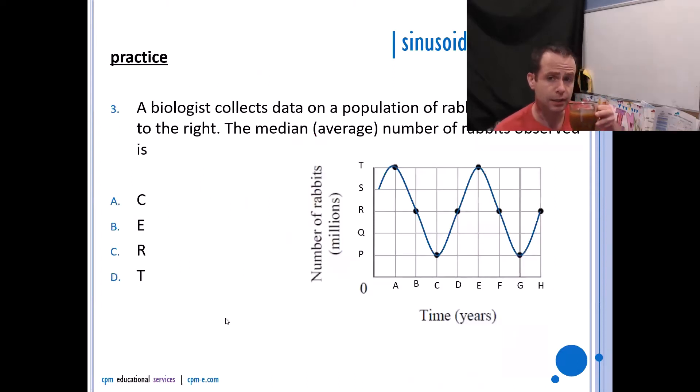A biologist collects data on a population of rabbits as indicated to the right. The median or average number of rabbits observed—well, the median is your midline. Your midline, your median, your average, they all point to R here. So it would be R. R would be the median population.